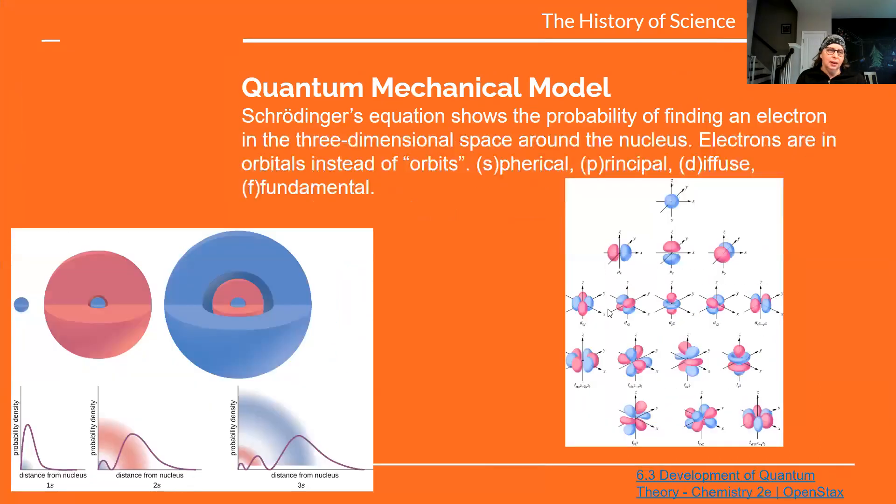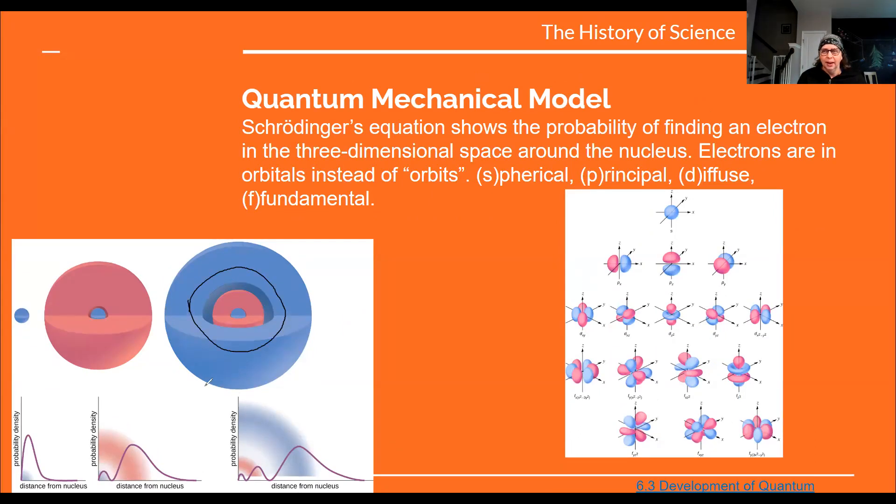So now we go with the quantum mechanical model. Without those earlier models, we would never have gotten here. So those scientists' contributions are very important. And as we go, we're just learning more and more. Schrodinger has an equation that figured out that there is an electron somewhere in here, and it's a high probability that we're going to find that electron in the space, but not necessarily orbiting around. It's more like it's in orbitals, which is what these little pictures are over here. Those orbitals can be spherical shape, principle, diffuse, or fundamental. You might recognize that SPDF from electron configuration.